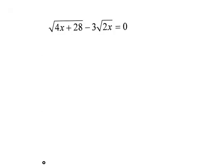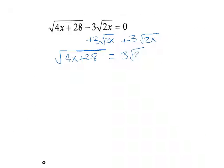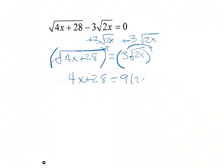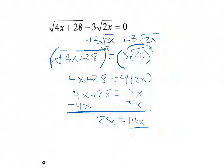Let's try another one. I add the 3 square roots of 2x to the other side, so now I have the square root of 4x plus 28 equals 3 square roots of 2x. I square both sides — making sure to square the whole thing. So 4x plus 28 equals 3 squared, which is 9, times 2x, giving 18x. Getting rid of 4x: 28 equals 14x, divide by 14, and x equals 2. Plugging in: square root of 36 is 6, and 3 times square root of 4 is 6. So 6 minus 6 equals 0 — it works.